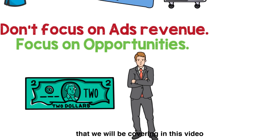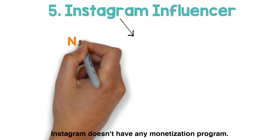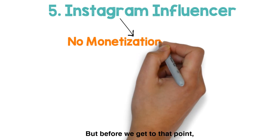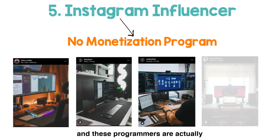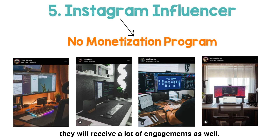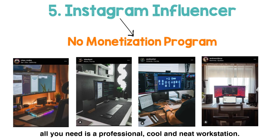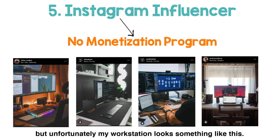The fifth and final point is to become an Instagram influencer. Instagram doesn't have a monetization program, but let's first talk about how a programmer can become one. These programmers are considered Instagram influencers because they have tons of active followers and receive a lot of engagement each time they post. To become an Instagram influencer, all you need is a professional, cool, and neat workstation. I wanted to become one myself but unfortunately my workstation doesn't quite look the part.